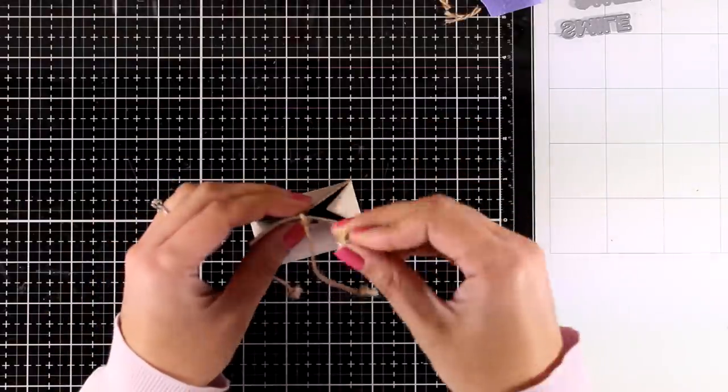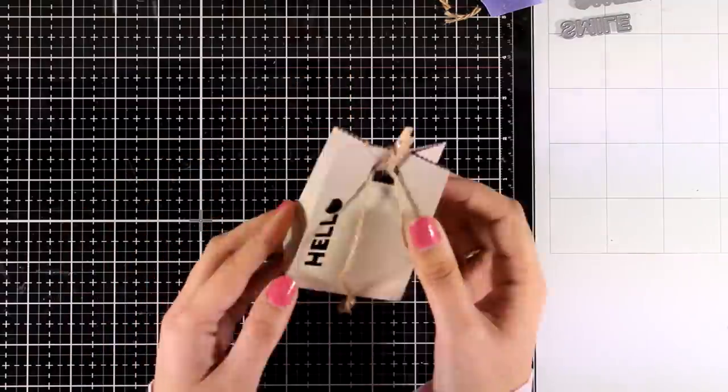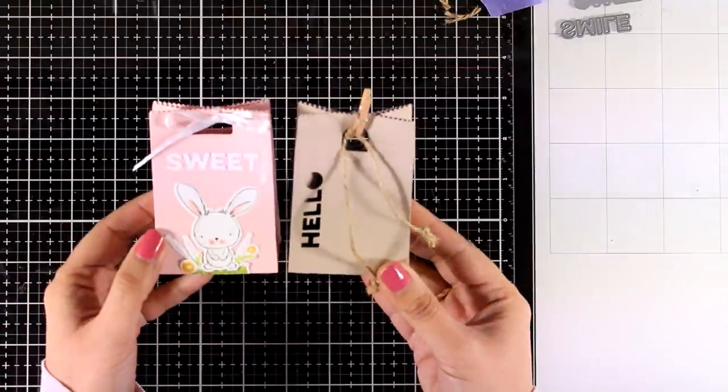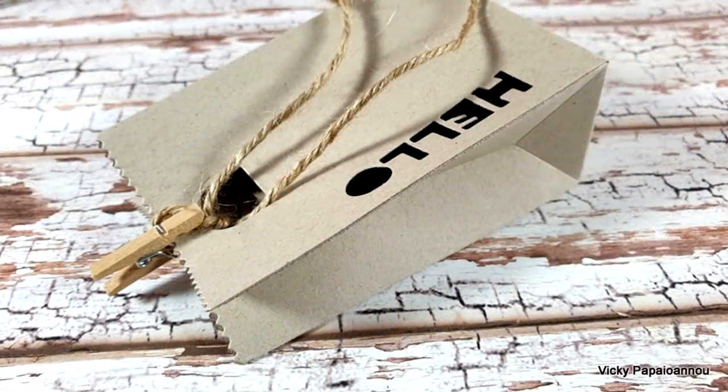Now if you want to add an extra touch you can add a little clothespin like I'm doing here. This is really easy and quick to recreate and you can make tons of them. It's just die cutting and sticking everything together.